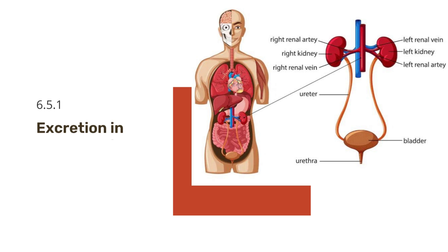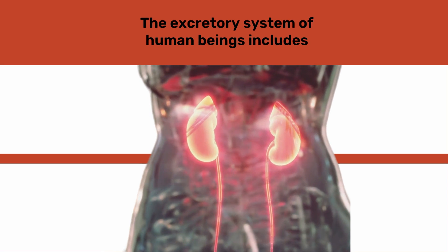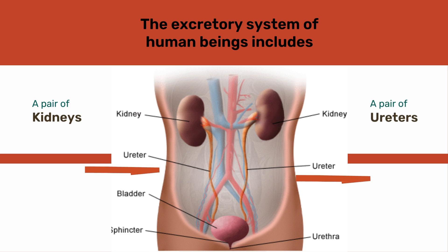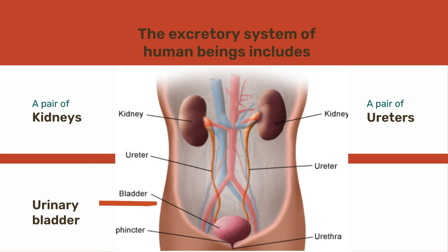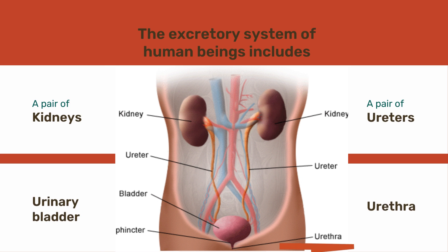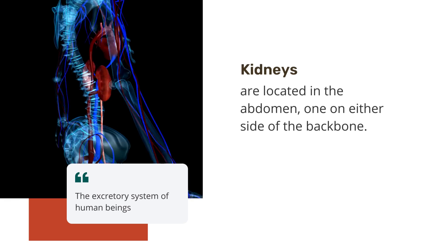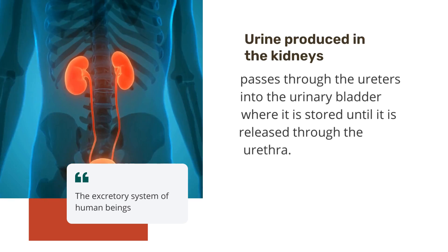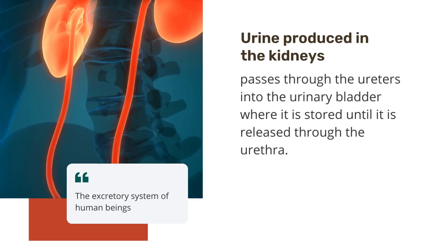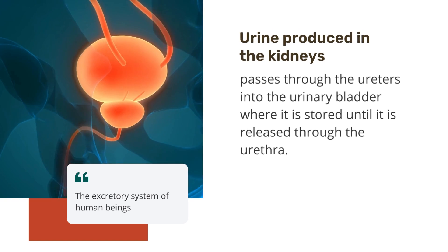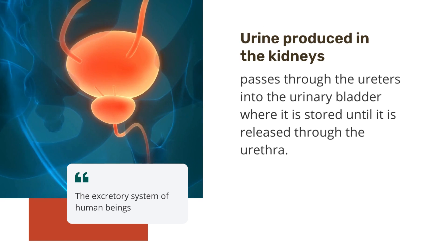Now let's see excretion in human beings. The excretory system of human beings includes a pair of kidneys, a pair of ureters, a urinary bladder and a urethra. Kidneys are located in the abdomen, one on either side of the backbone. Urine produced in the kidneys passes through the ureters into the urinary bladder where it is stored until it is released through the urethra.